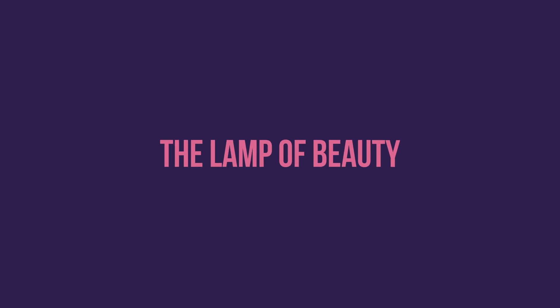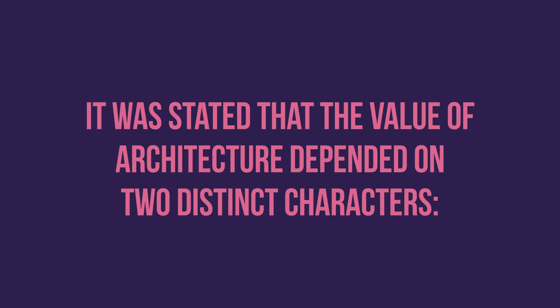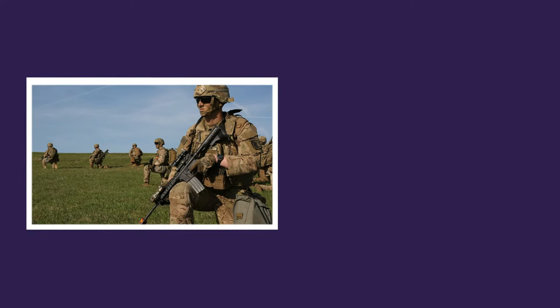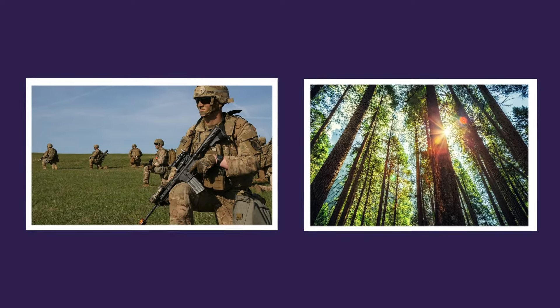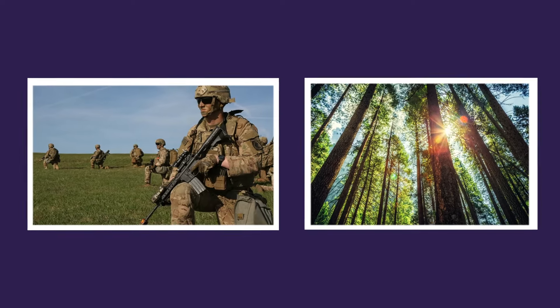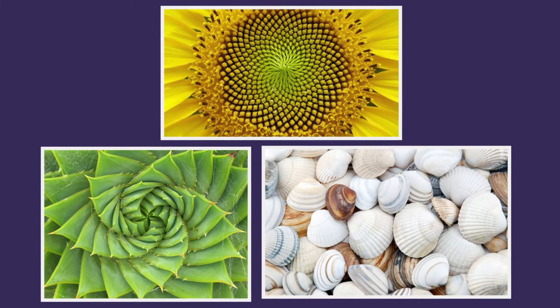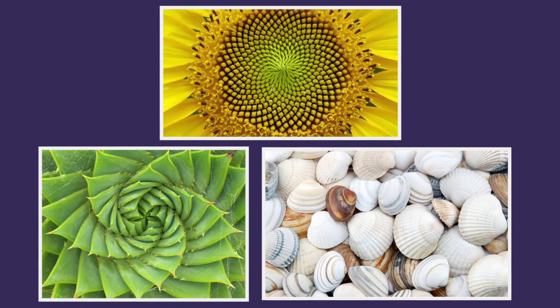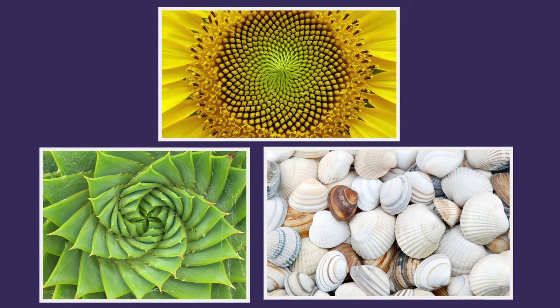The second lamp we will be discussing today is the lamp of beauty. It was stated that the value of architecture depended on two distinct characters: the impression it receives from human power and the image it bears of the natural creation. I have endeavored to show in what manner its majesty was attributable to a sympathy with the effort and trouble of a human life. I desire now to trace that happier element of its excellence, consisting in a noble rendering of the image of beauty, derived chiefly from the external appearances of organic nature.